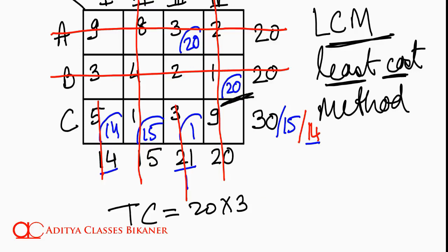Then, I transported 20 units at cost of 1 per unit. So, it cost me 20 multiplied by 1. Then, I transported 14 units at unit cost of 5 rupees. So, it will be 14 at 5.